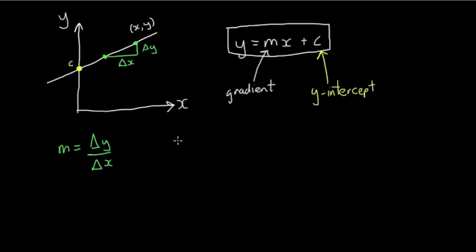And if we rearrange the equation of a straight line, to make c the subject, we get c equals y minus mx. So if we have values of y, m, and x, we can calculate the value of c.